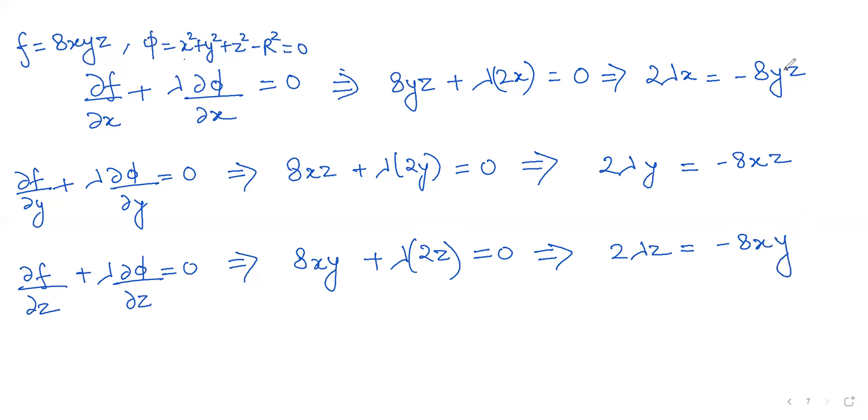Now we are seeing that we have -8yz, -8xz, and -8xy. From the first equation, multiply by x to get 2λx² = -8xyz. In the second equation, multiply by y to get 2λy² = -8xyz. In the third equation, multiply by z to get 2λz² = -8xyz.